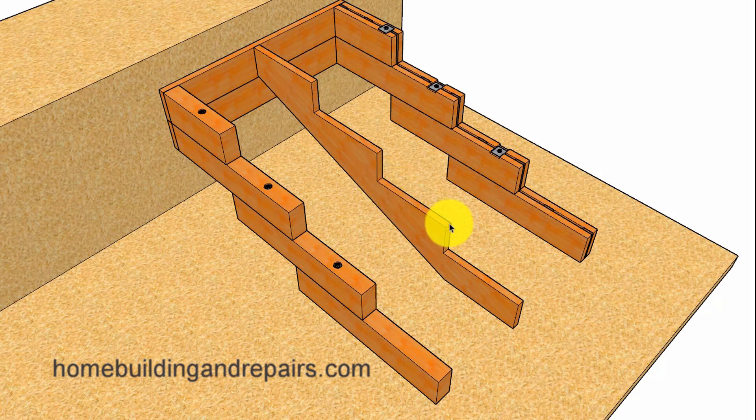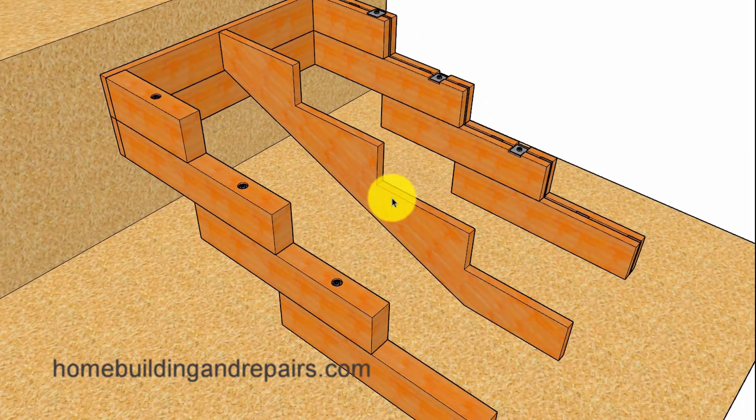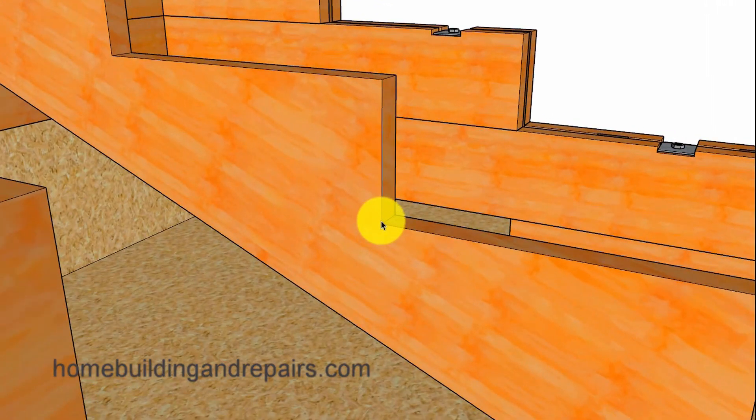In our example here we have an 18 inch long tread and a 7.5 inch tall riser. If we use a 2x14 we're going to be fine. We're going to have 6.5 inches here and usually 5.5 inches is sufficient.